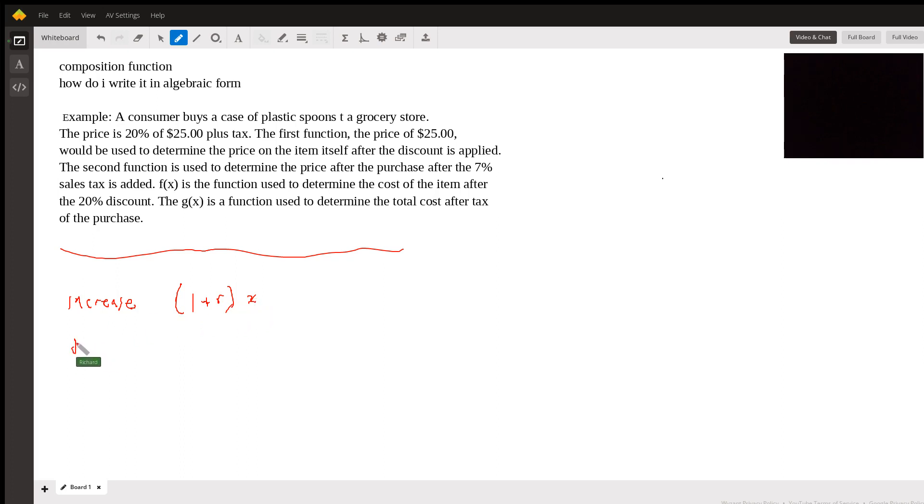And then if we're going to decrease something, it would be one minus R. So you're going to buy something on sale, for example, X would be the original price. The price after the sale is applied would be one minus R times X.